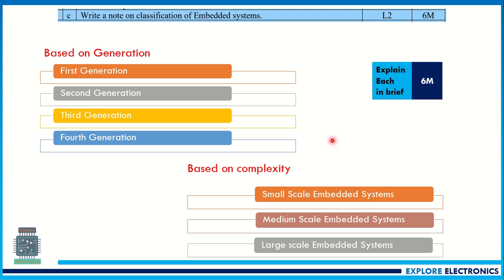The next question is again on embedded systems: write a note on classification of embedded systems. There are different ways we can classify embedded systems — first based on generation and based on complexity. There are four generations of embedded systems we can categorize. Depending on complexity: small scale, medium scale, and large scale. For each generation — first, second, third, and fourth — explain what they mean, and for small, medium, and large scale, give examples and specifications.